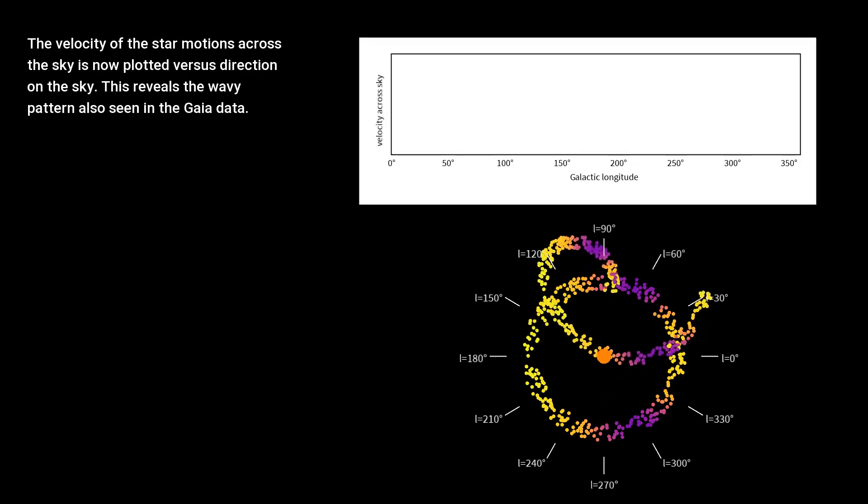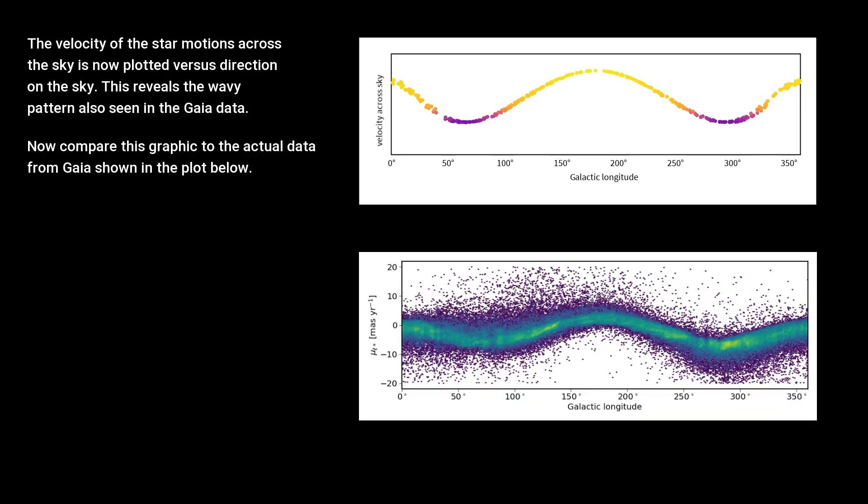The velocity of the star motions across the sky is now plotted versus direction on the sky. This reveals the wavy pattern also seen in the Gaia data. Now compare this graphic to the actual data from Gaia shown in the plot below.